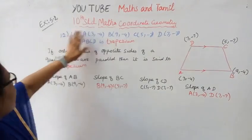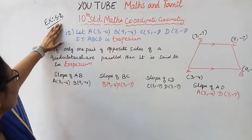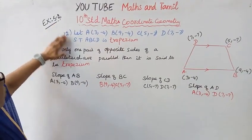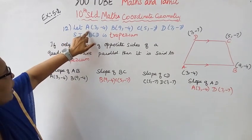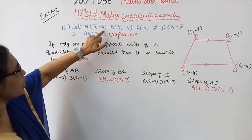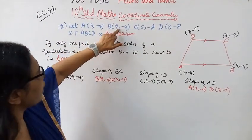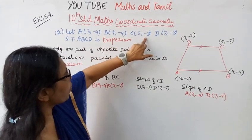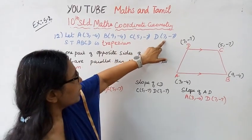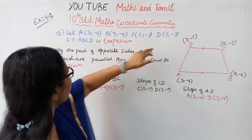In coordinate geometry, exercise 5.2, question 12: the points are A(3, -4), B(9, -4), C(5, -7), and D(7, -7).